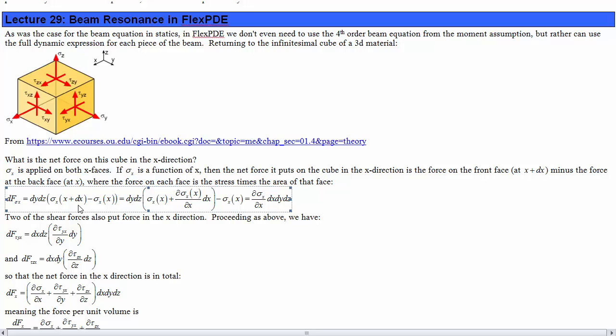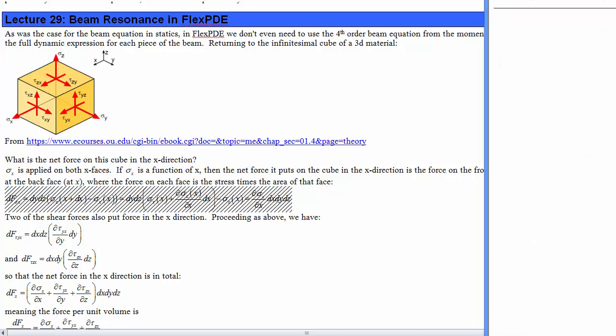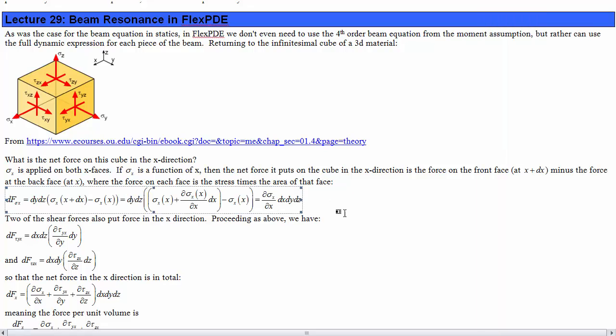The net force in the x-direction from the sigma x at the front face minus the back face would be this expression. You can simplify after you write out that sigma x at x plus dx should be sigma x at x plus the rate of change of sigma x with respect to x at x multiplied by dx. Subtracting those and the sigma x at x cancels in each expression. We're left with del sigma x by del x dx dy dz.